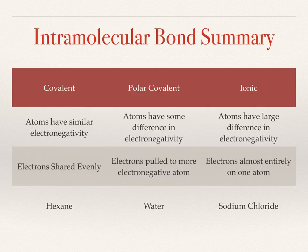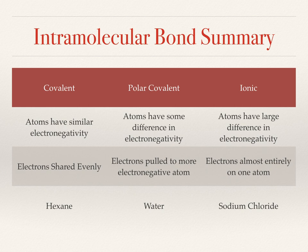A quick overview of the differences: covalent bonds occur when atoms have similar electronegativity and electrons are shared evenly - an example solvent is hexane. Polar covalent bonds occur when atoms have some difference in electronegativity and the more electronegative atom pulls electrons towards itself - a good example is water. Ionic bonds occur when there is a very large difference in electronegativity and one atom steals electrons from the other - the standard example is sodium chloride, the most commonly encountered ionic material.